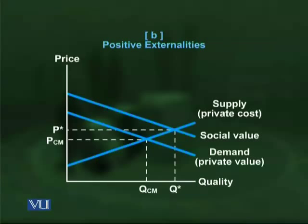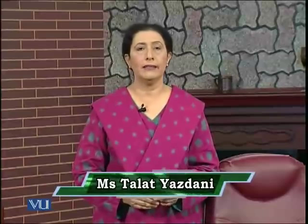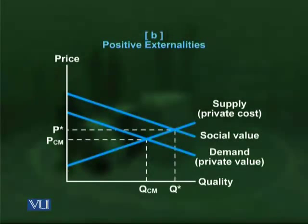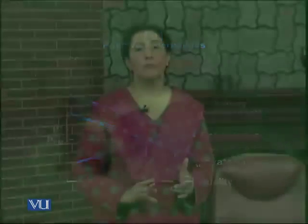Now look at the other diagram showing the effect of positive externality. The demand curve represents value to buyers. As a result of more education, training, or research and development, the demand curve — or benefit curve — shifts upwards. The socially required amount of education is shown as Q* (greater than QCM), at price P*. This shows the inverse problem: a problem of underproduction. As a source of market failure, we will concentrate on negative externalities.